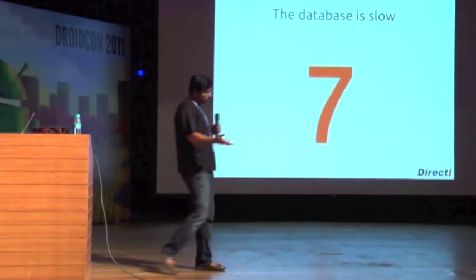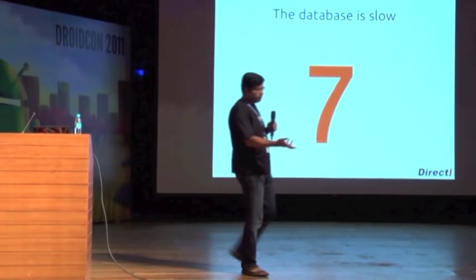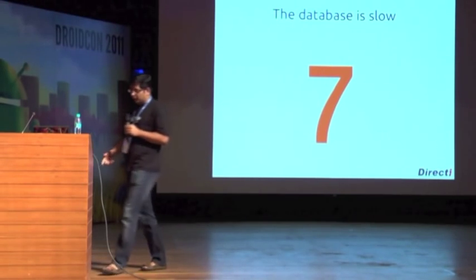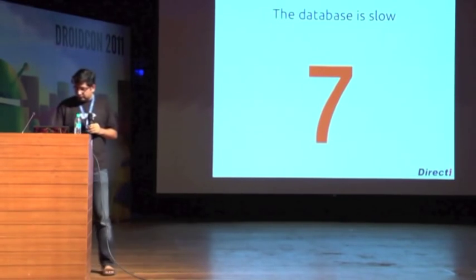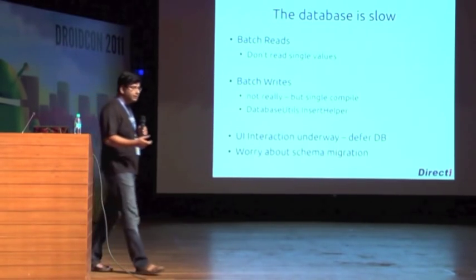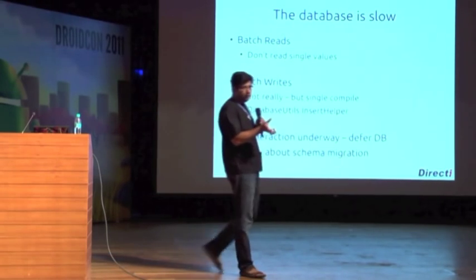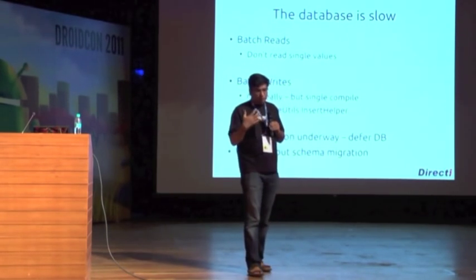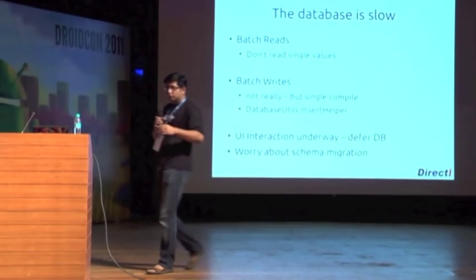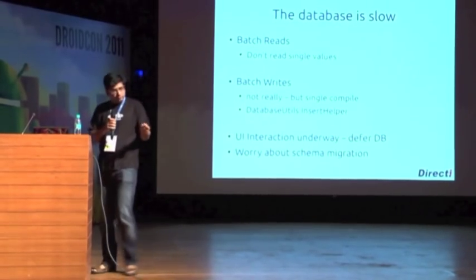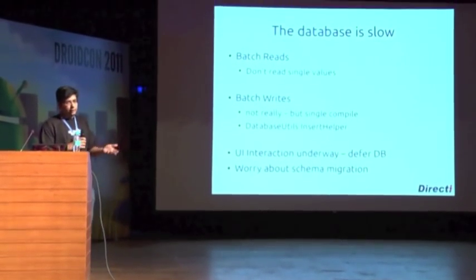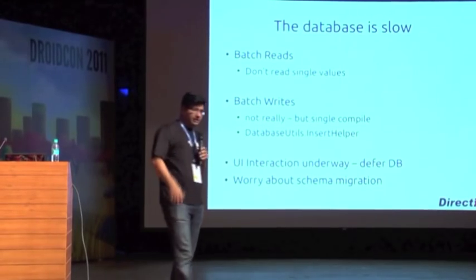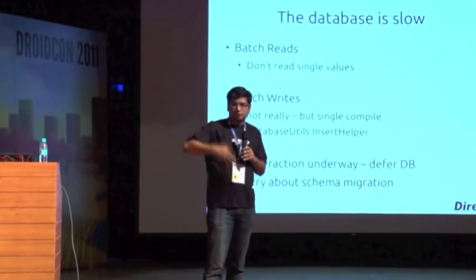Databases are generally slow because they involve disk I/O. But the SQLite database on Android, on a small low-end device, is very slow. One of our biggest performance problems was scrolling. Our CEO has an obnoxious number of people he knows — some 10,000 of them — and he wants them all on his roster.